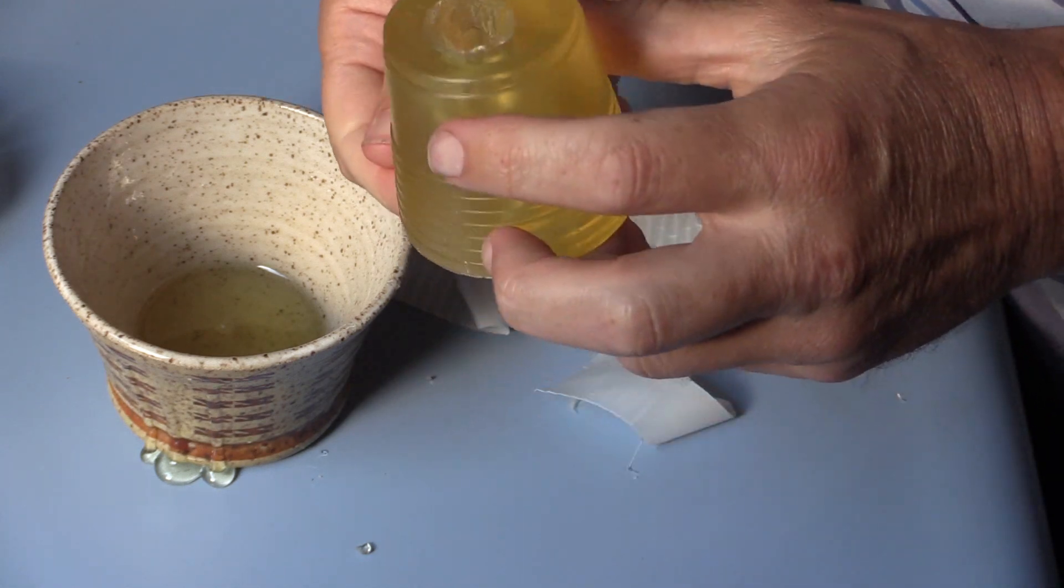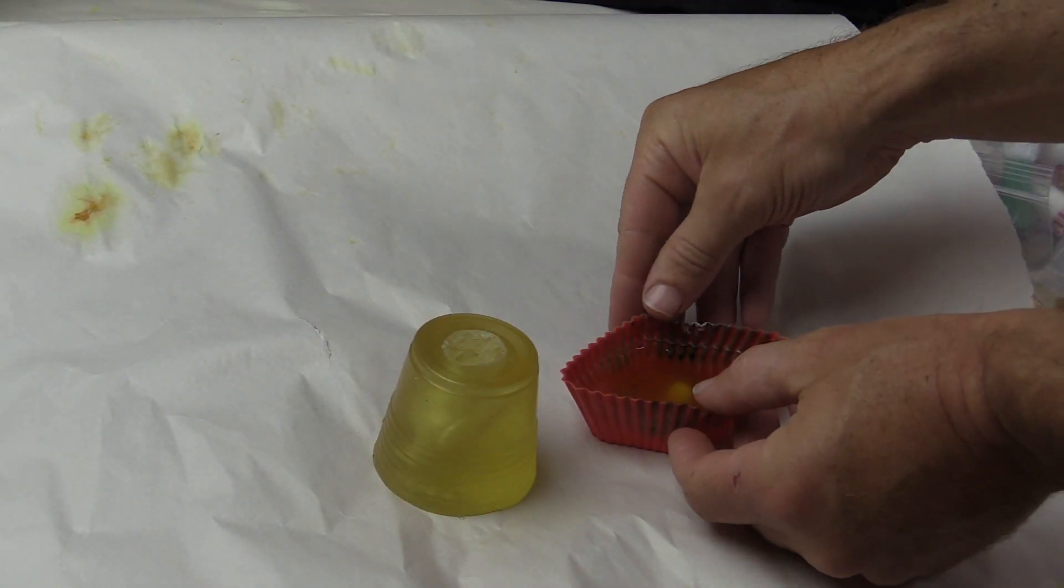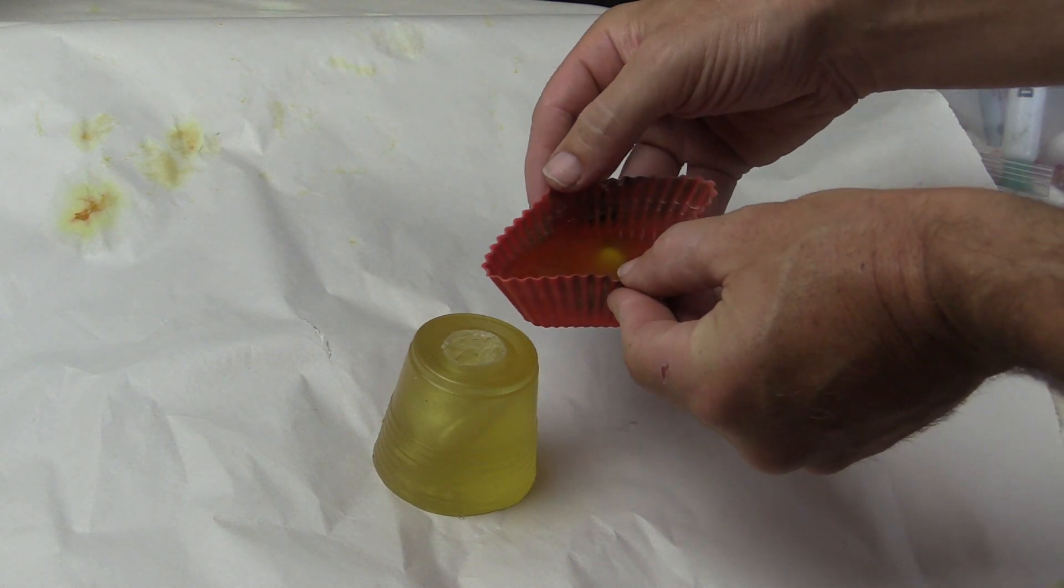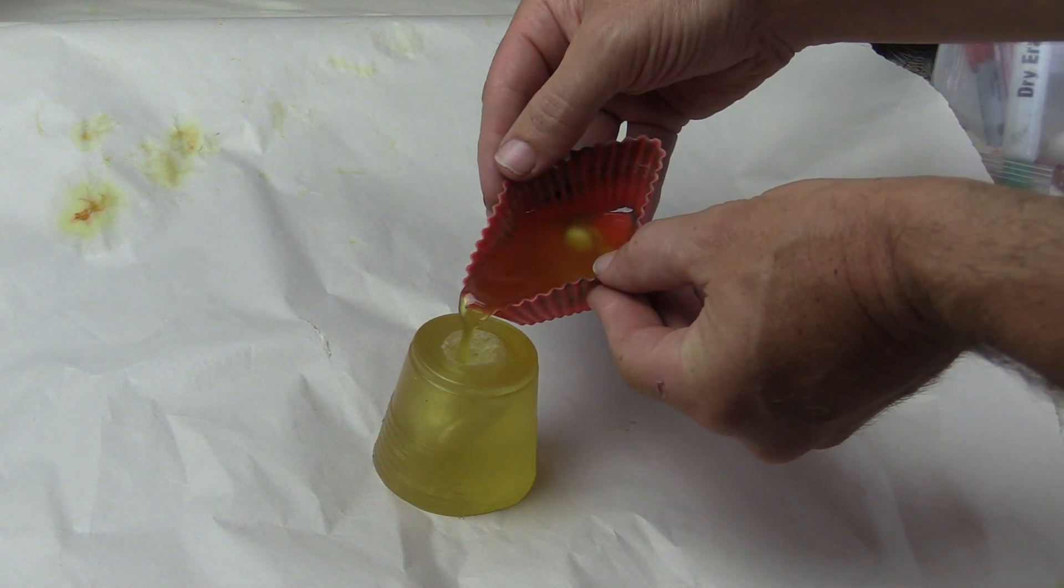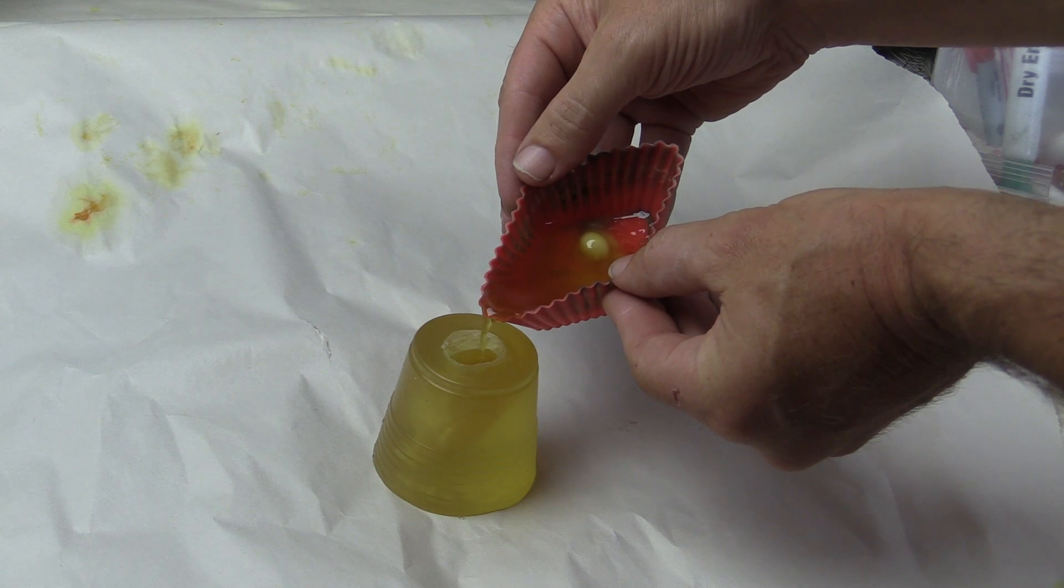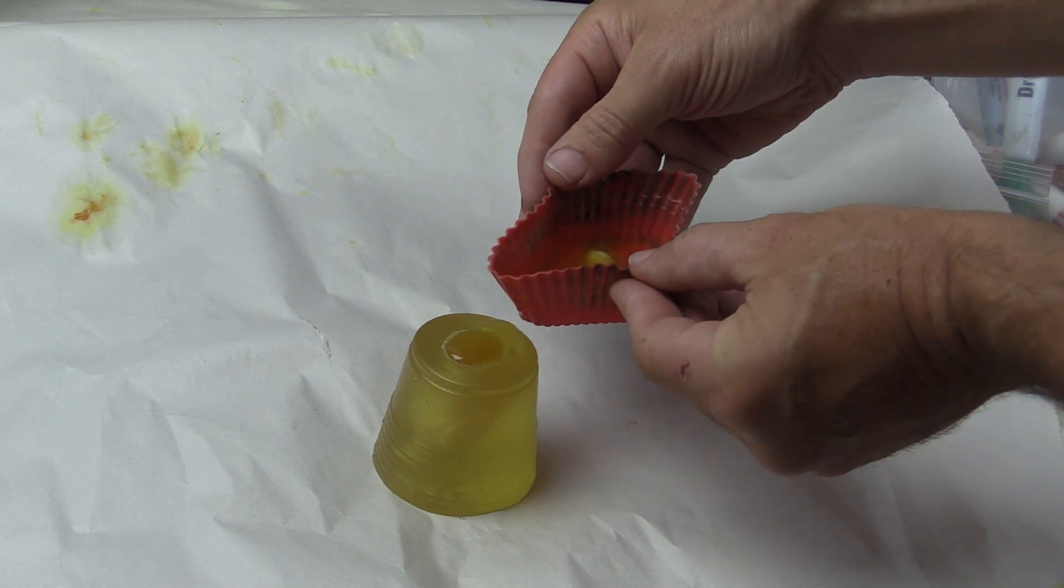The ComposiMold mold is now ready for the wax. I want the mold to be cold when I pour so while the mold is still cold from being in the freezer I melted the beeswax and now I pour it into the mold.